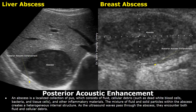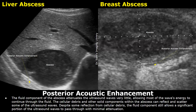An abscess is a localized collection of pus. It has a mixture of fluid and cellular debris such as dead white blood cells, bacteria, and tissue cells. Overall, an abscess is a liquid, so it is also a low-attenuating structure, and posterior enhancement is also seen behind an abscess. You can notice increased brightness behind the liver abscess and the breast abscess. Ultrasound waves pass through the liquid contents of the abscess and reflect off the solid cellular materials. This reflection of the solid materials produces medium-level internal echoes inside the abscess.